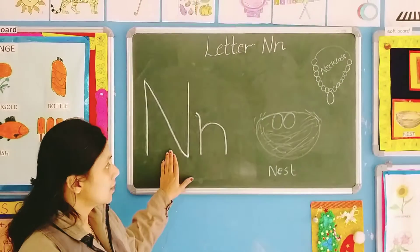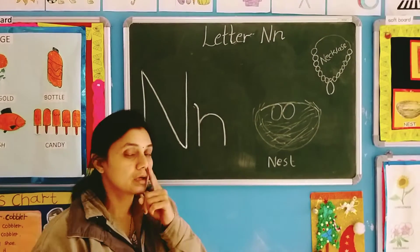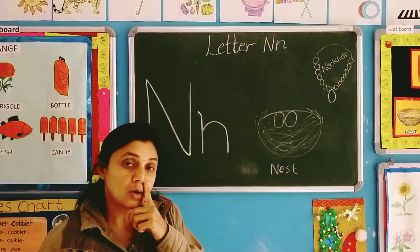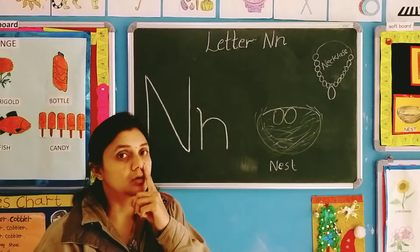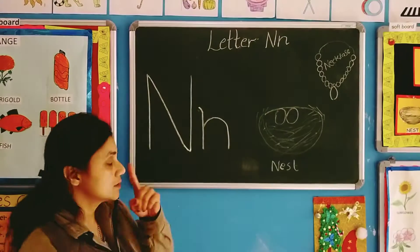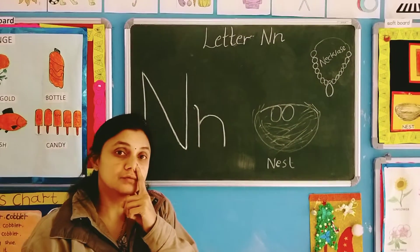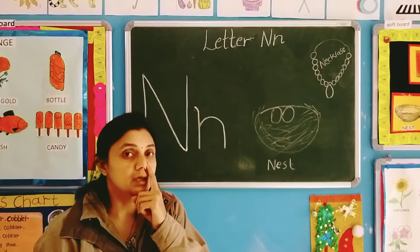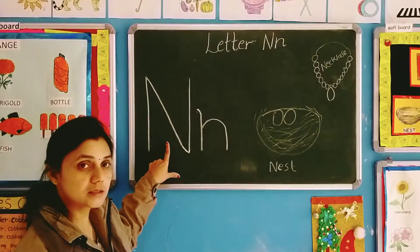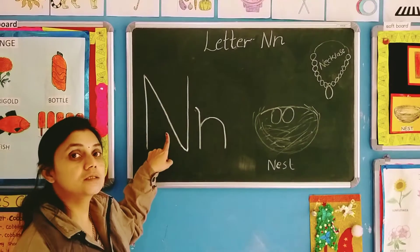Abhi apko pata iska sound kya ni? Iska sound hai N. Isei pakdou and bolou N. Is sound aata hai nahi? N — jo bhi sounds, ya haa se, aisei nikalti hai nahi. It's an echo sound — it comes from your nose. The sound of N is N.